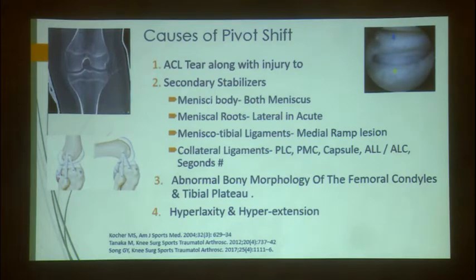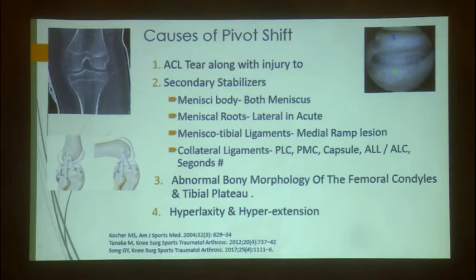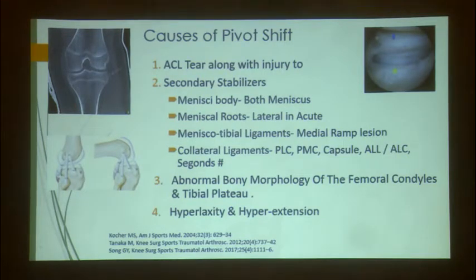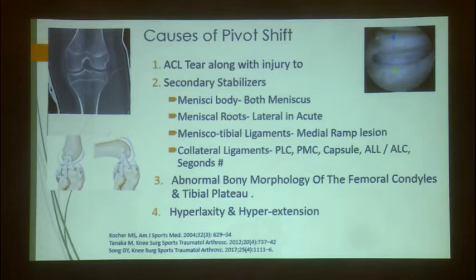What causes a high-grade pivot shift? It is the ACL tear combined with secondary stabilizer damage. A young surgeon seeing an ACL tear on MRI may miss the pivot shift test or fail to elicit it due to patient spasm or anxiety, proceed with ACL reconstruction, and later face a retear. One must look into secondary stabilizers. The meniscus is critical — if both menisci are gone, or if the lateral meniscus or its root is gone in an acute setting, pivoting will persist and must be addressed.